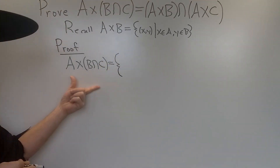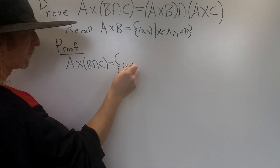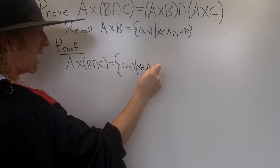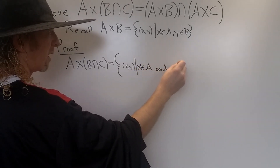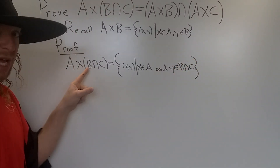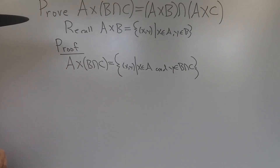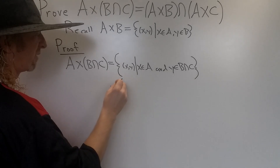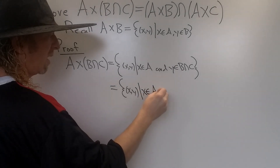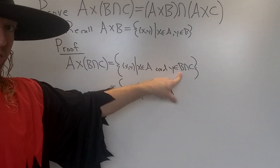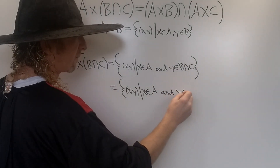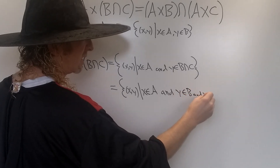This is the set of all ordered pairs X comma Y such that X is in A — so the first component comes from A — and the second component comes from B intersection C. We can rewrite this as the set of all ordered pairs X comma Y such that X is in A, and now we write down what it means for Y to be in the intersection: Y is in B and Y is in C.